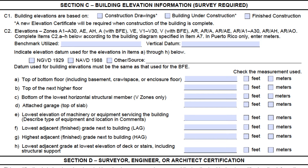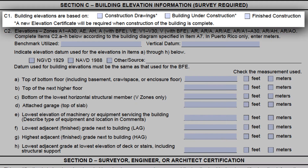Starting with section C, let's look at the first field, C1. This field asks the certifier to identify which stage of construction the building is in. It is definitely a required field since both insurance and compliance rely on whether the building is finished or still under construction. For CRS purposes, you will only be asked to submit those ECs that are marked finished construction. We'll want to see the as-built elevations and information for a building, not anything prior to that.